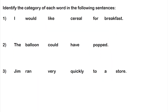Now that we know lexical categories, let's assign them to some example sentences. In 'I would like cereal for breakfast': 'I' is a noun, 'would' is a modal auxiliary, 'like' is the main verb — a sentence needs a verb and 'would' as a modal won't serve as the main verb — 'cereal' is a noun, 'for' is a preposition, and 'breakfast' is a noun.